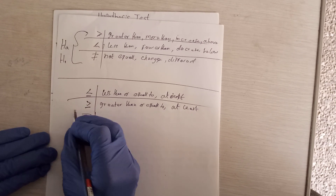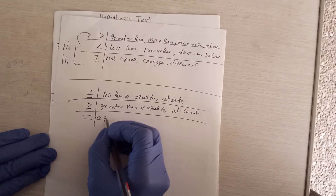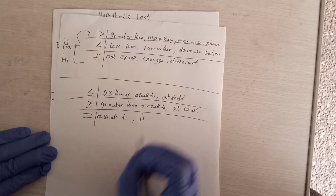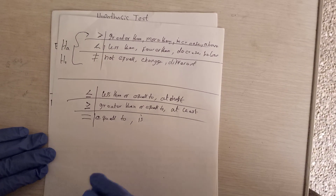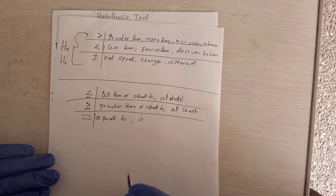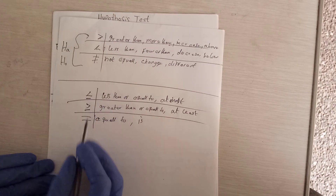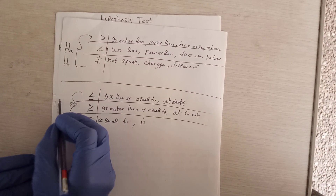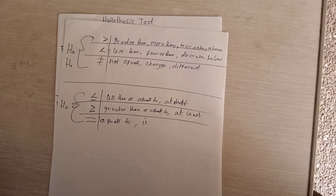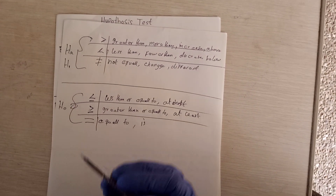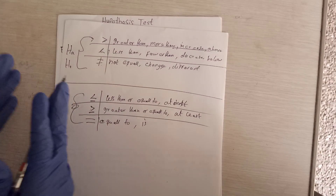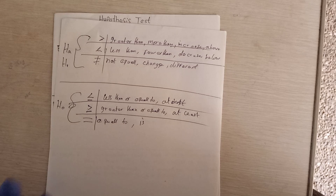When you see the equal-to sign '=', it can also be expressed as 'is' — for example, 'is five' means equal to five. When you see these words, you should know they are going for the null hypothesis. Depending on the type of phrase in the statement, it tells you whether it is H1 or H0.